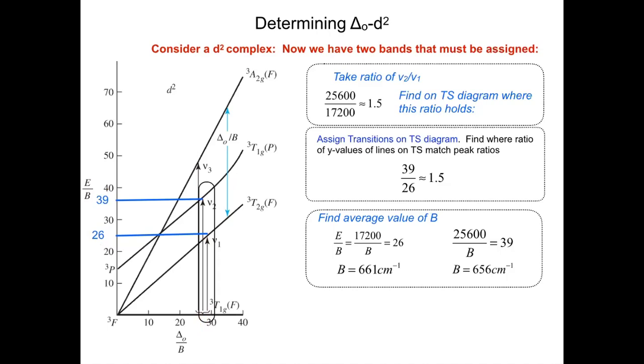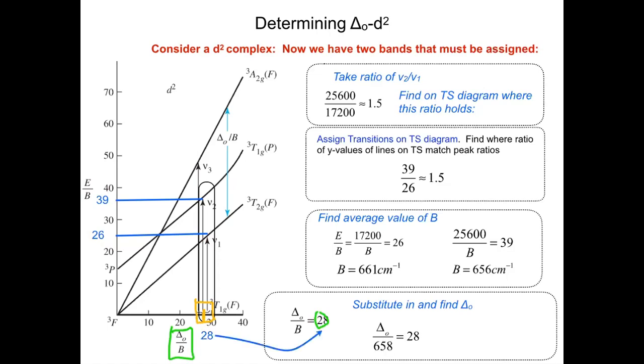Once we have our average value of B, we can average those two. Then we can simply come down here and remember we know where we are on the x-axis, right down here. We can figure out what that is. The x-axis units are delta octahedral over B, but we now have a value of B. We can plug that in. I said we were at 28 on the x-axis. We now know what B is from our average, so we can substitute that in. We can now calculate and determine what our delta octahedral is. In this case, I got delta octahedral to be 18,600 wavenumbers.